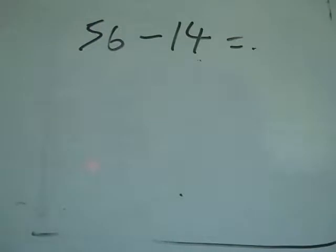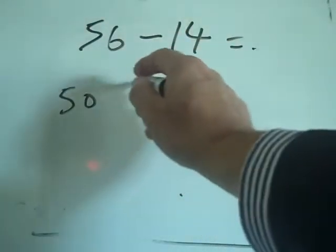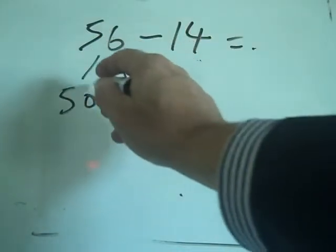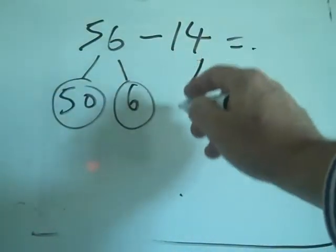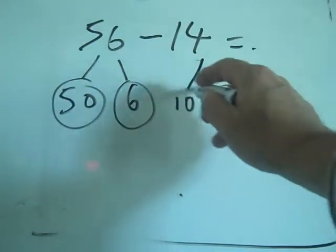So we have to break the bits down into their parts. So the 56, just like before, we can break that into a 50 and a 6. The 14 we can break into a 10 and a 4. That's the two parts that add up.